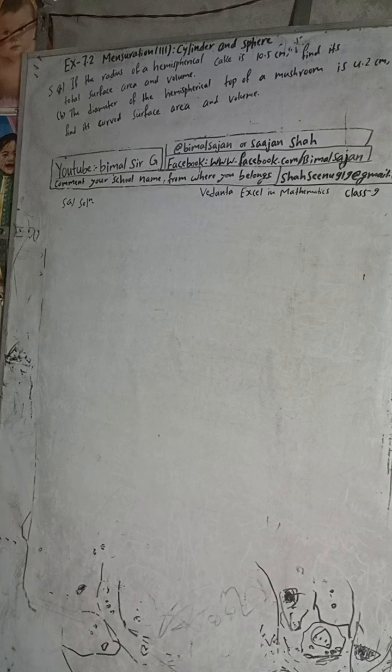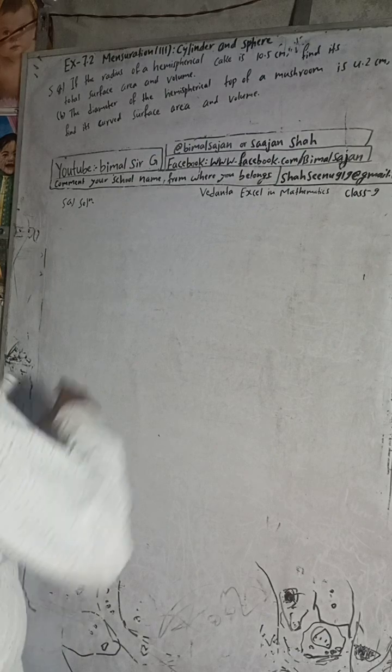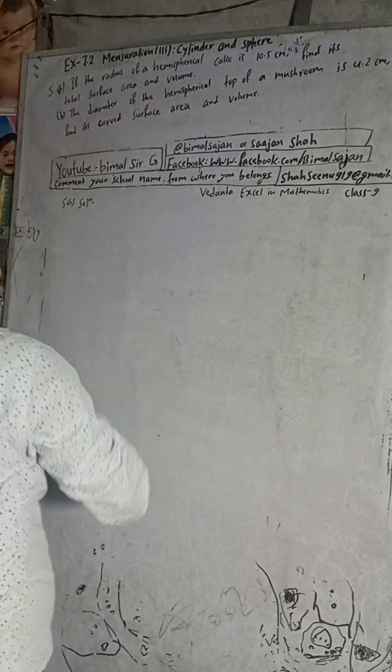Hi class 9 and 10 students, welcome back to Bimal Sarji's YouTube channel. This is question number 5a, exercise 7.2, mensuration third part — cylinder and a sphere — from Vedanta Excel in Mathematics class 9.